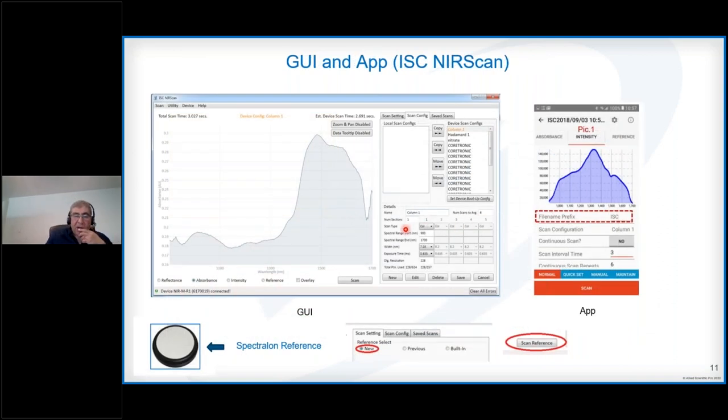As far as the software is concerned for NervaScan, there is the PC software or GUI. You can see it here. You have different plots - reflectance, absorbance, intensity. You can also define different scan configurations. Column 1 and Hadamard are there already, but you can define your own scan configuration if you like. You can also record your own reference. If you put it on scan setting, this scan tab will turn into reference, and you can put this on new. You can record your own reference from a spectralon surface, for example. Once that's done, the reference turns into scan, and then you can measure your spectra. If you're changing parameters, it's always recommended to record a new reference. You can also use the app to communicate with the device via Bluetooth.